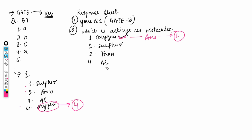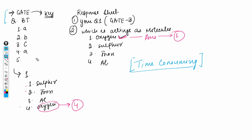इसलिए कह रही हूँ कि option number ना देखकर exactly देखें कि आपने answer क्या pick किया है - wording में देखें कि आपने answer क्या किया है, rather than option number check करने के. इस ढंग से आपको अपना question paper check करना है. आप GATE के paper का question number और उसका content लिख सकते हो, और option content को match करना है, ना कि option number को. हो सकता है आपके question का option number 1 हो और उनका option number 4 हो, लेकिन answer तो correct है क्योंकि सही answer oxygen ही है - दोनों में option number different दे के रखा है.